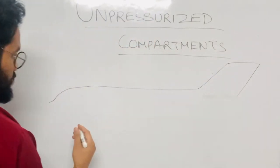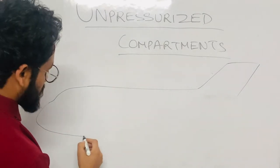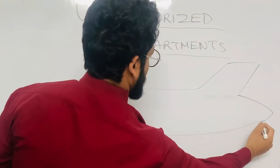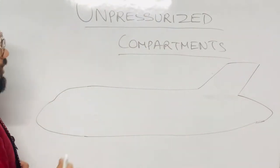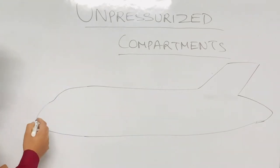...the Airbus A320 plane. Okay, so in this plane, what are the unpressurized areas? The unpressurized areas are: this radome section, this one. This is the unpressurized area.